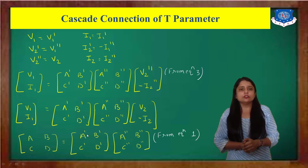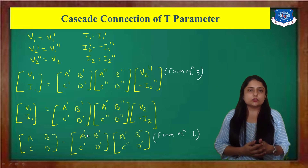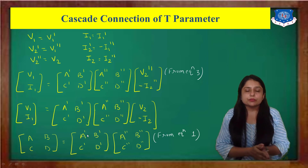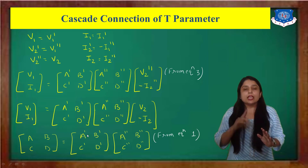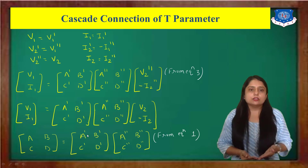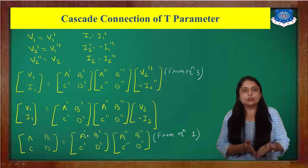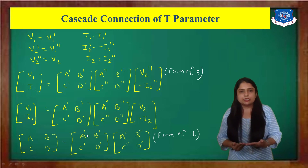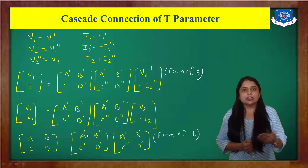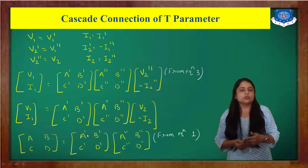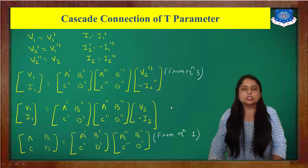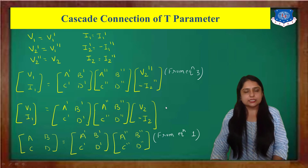So, whenever your transmission parameters are connected in a series or cascade connection, you find the individual network transmission parameters and then simply multiply these two parameter matrices using matrix multiplication. Note that every time we must consider current I2 as negative because we are considering the transmission parameter in a series connection. This is all about the cascade or series connection of T-parameter.